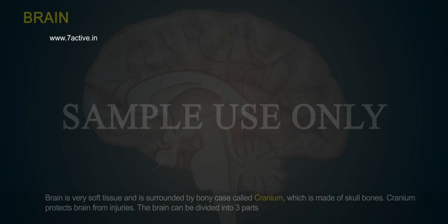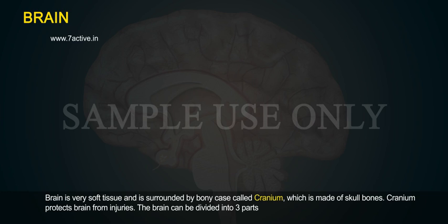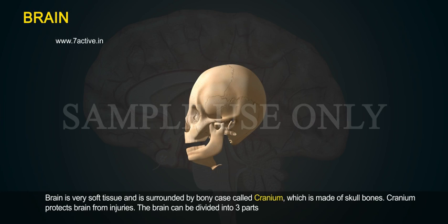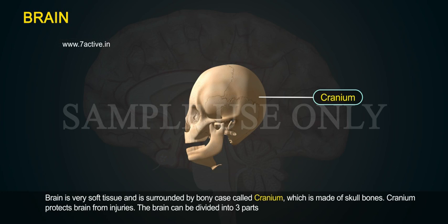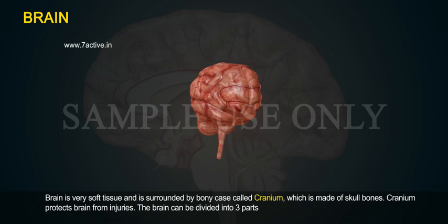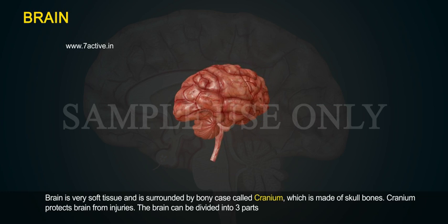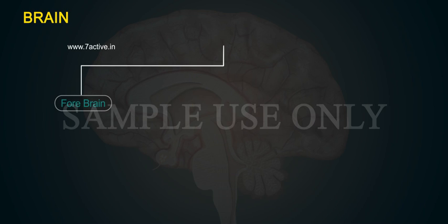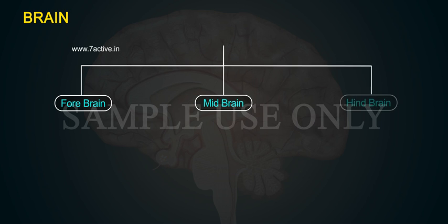Brain is very soft tissue and is surrounded by a bony case called cranium, which is made of skull bones. Cranium protects brain from injuries. The brain can be divided into three parts: forebrain, midbrain and hindbrain.